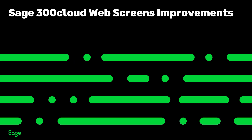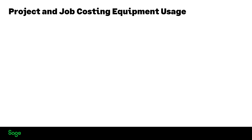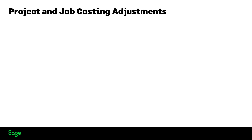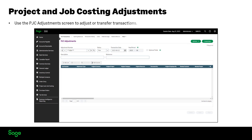Let's start by looking at the Sage 300 Cloud web screens improvements. This release includes the following new web screens for Project and Job Costing. Use the Project and Job Costing Equipment Usage screen to record the use of equipment that you own. Use the PJC Adjustment screen to adjust or transfer time cards, equipment usage, material usage, material return, cost, or charge transactions that you have posted.